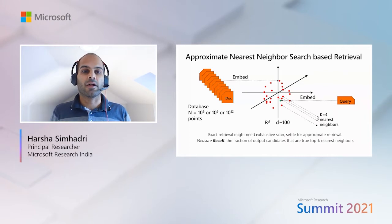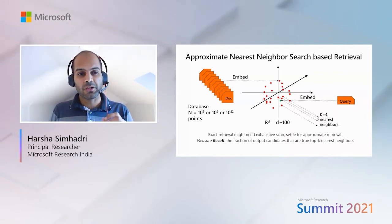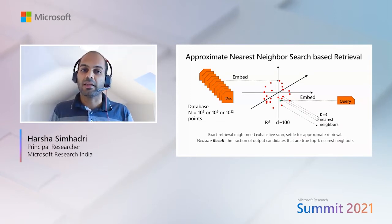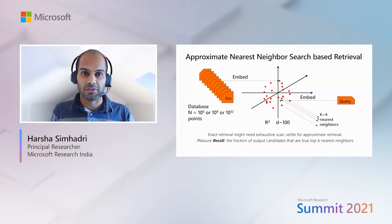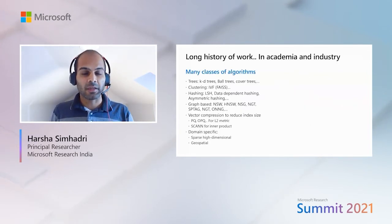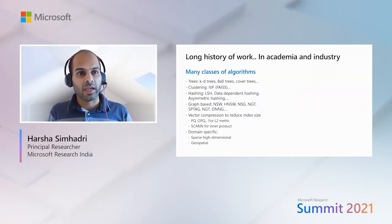As a result, we settle for approximate methods which have sublinear time complexity, and we measure recall, which denotes the fraction of candidates output by the algorithm that are in fact the true top-k nearest neighbors. There's a rich history of work in this topic spanning many classes of algorithms including trees, clustering, and hashing.